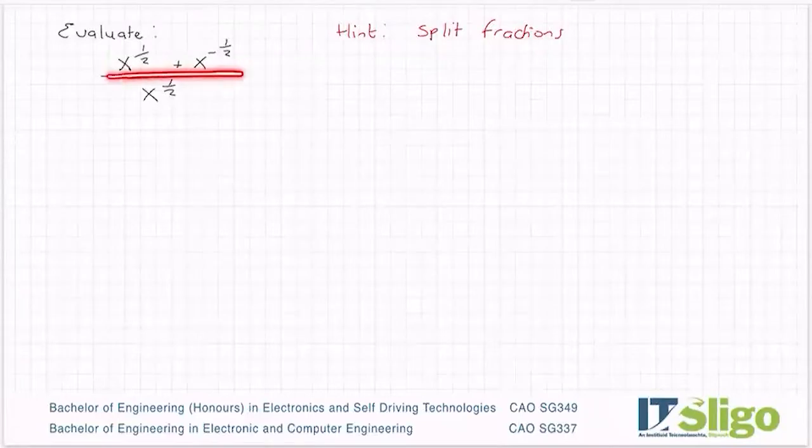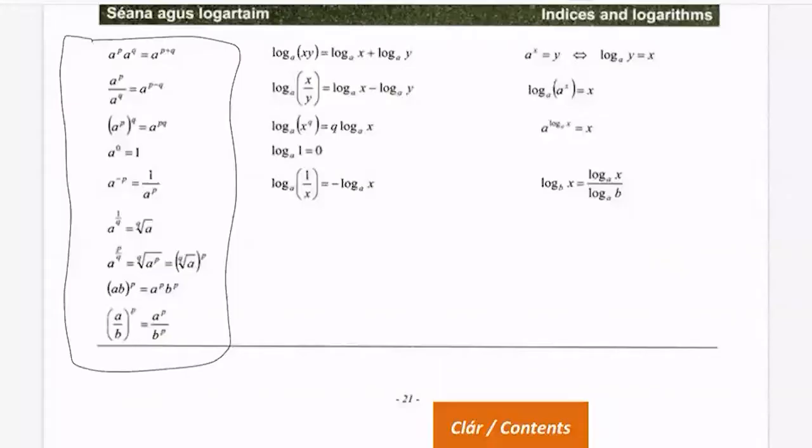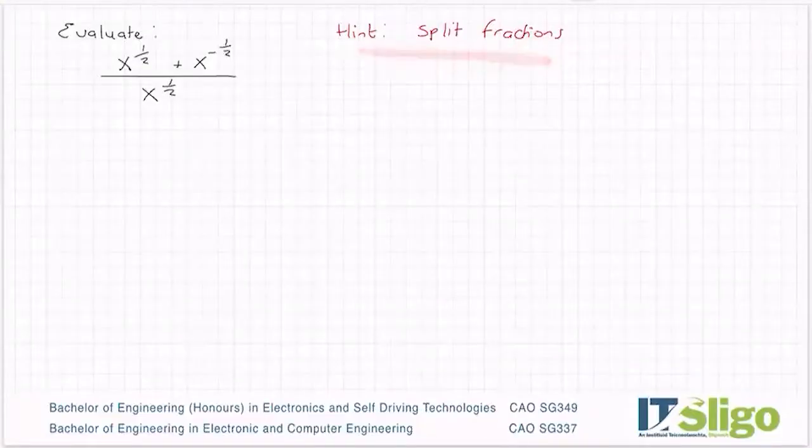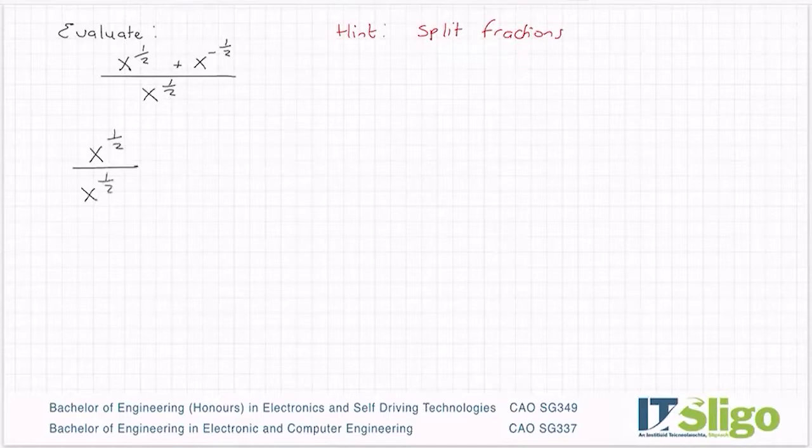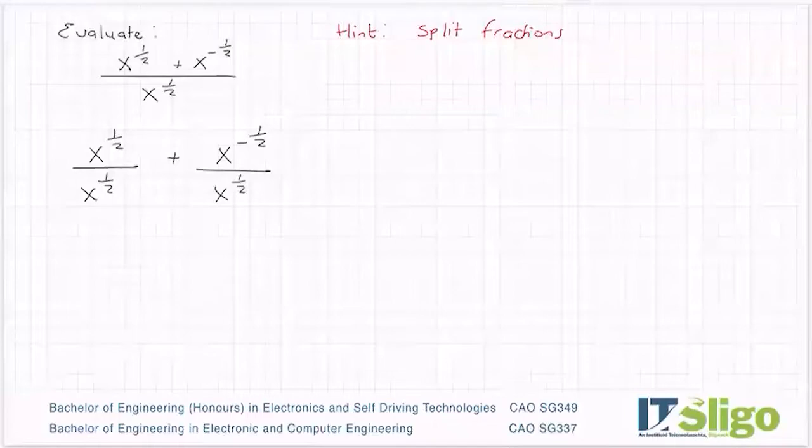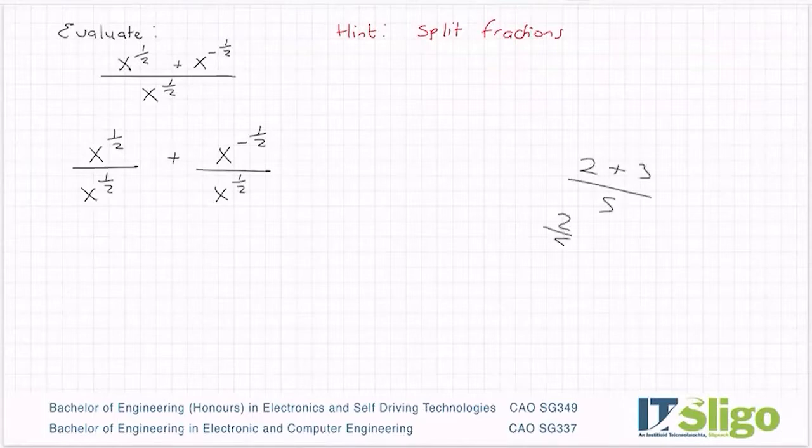You can see the first line, the top line here is x to the power plus x to a power. It's really the plus sign I'm focusing on, and if I look at my rules here, I don't see anything on the left that's two terms added together. So there isn't a whole pile I can do there with the top, so that's why I've had this hint here to say split the fractions. What you can do is write it as x to the power of a half over x to the power of a half plus x to the power of minus a half over x to the power of a half.